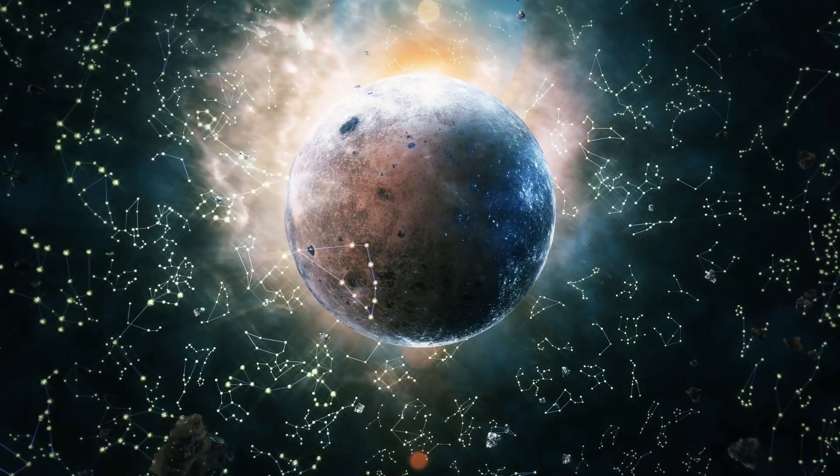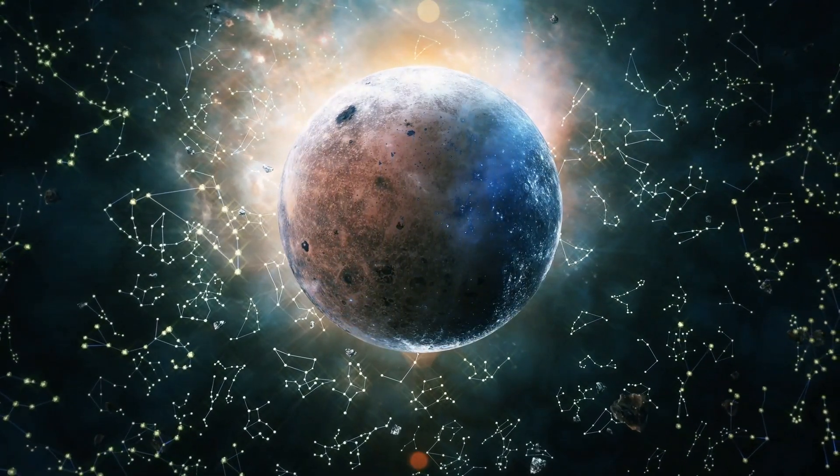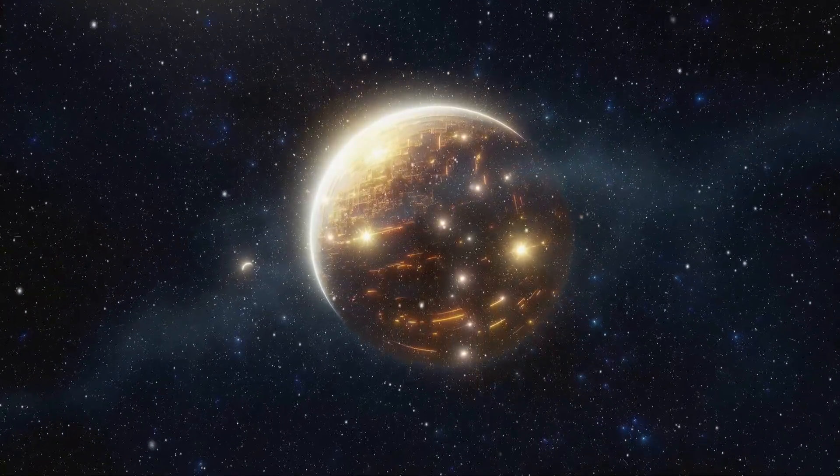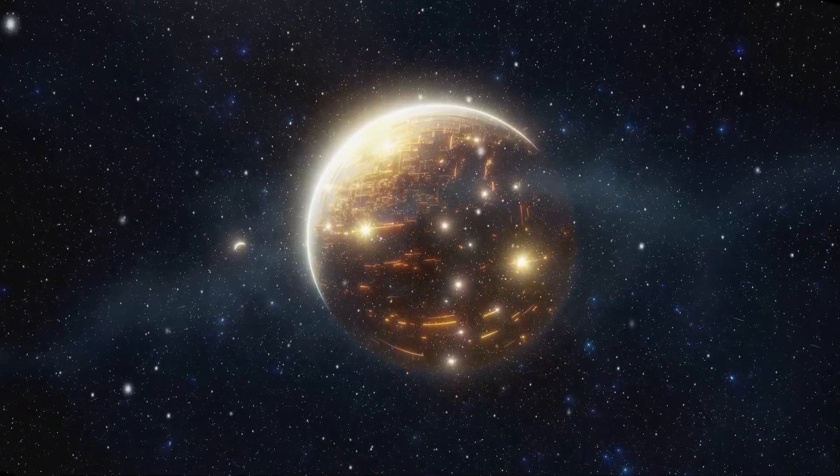At the heart of this new understanding is Sputnik Planitia, the famous heart-shaped region on Pluto's surface. What was once thought to be a frozen stretch of nitrogen ice is now believed to conceal an enormous liquid ocean beneath its icy shell, insulated by thick layers of ice.